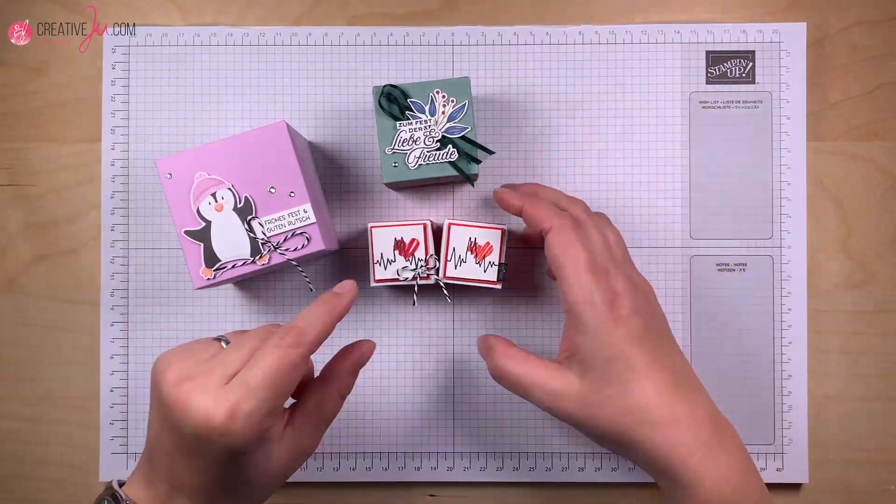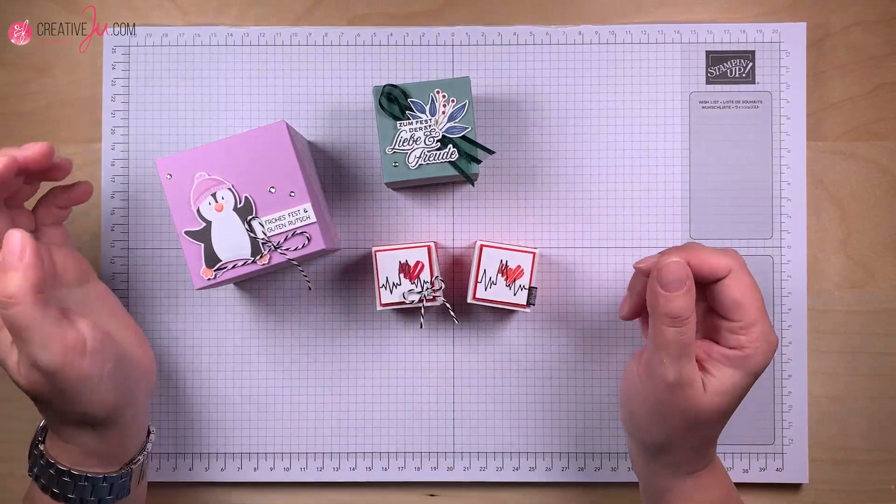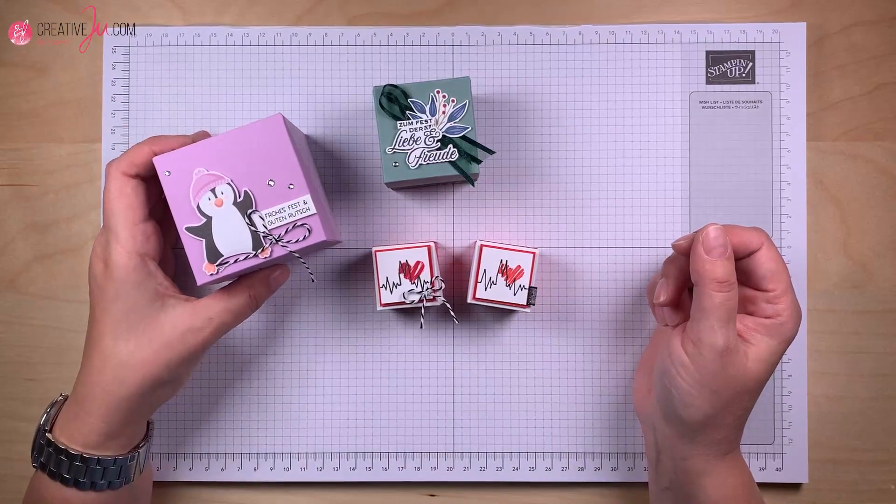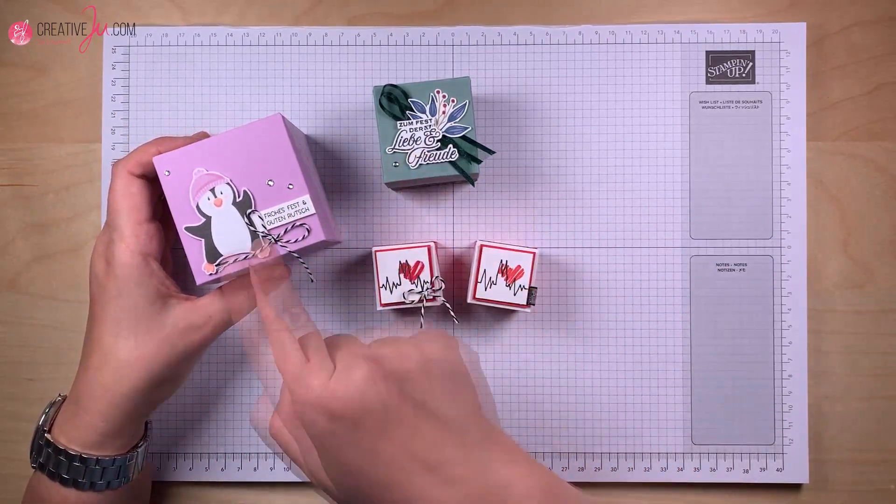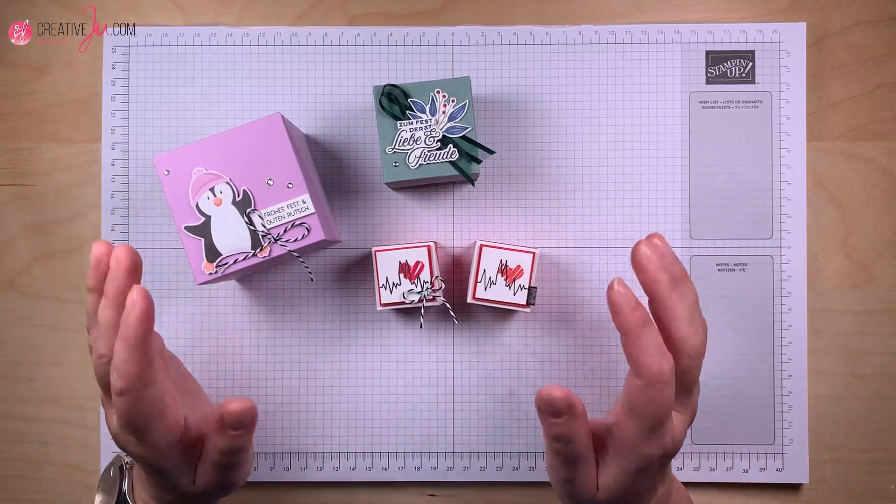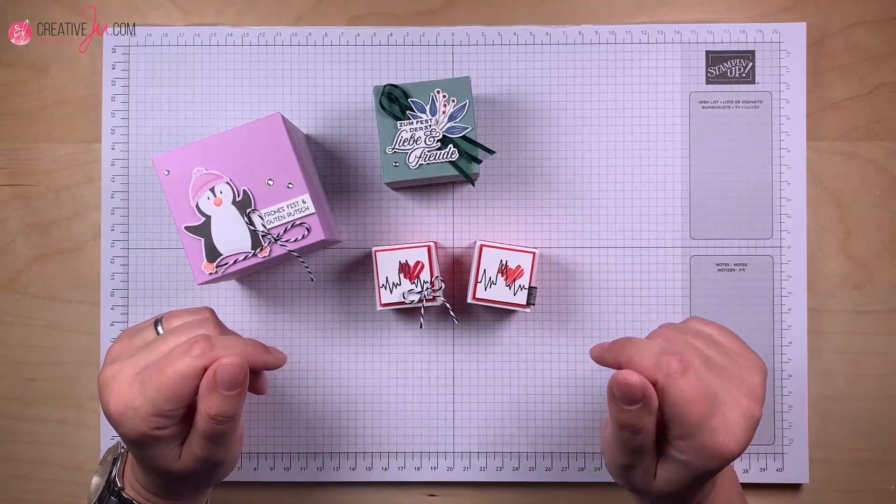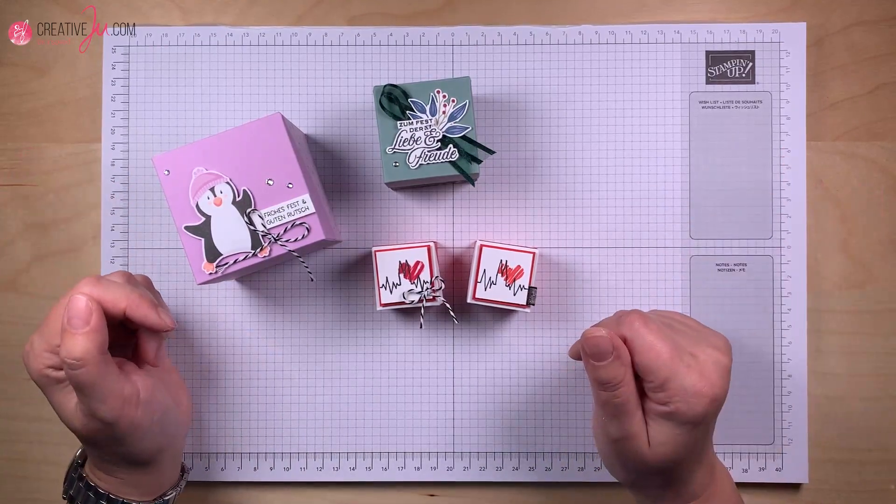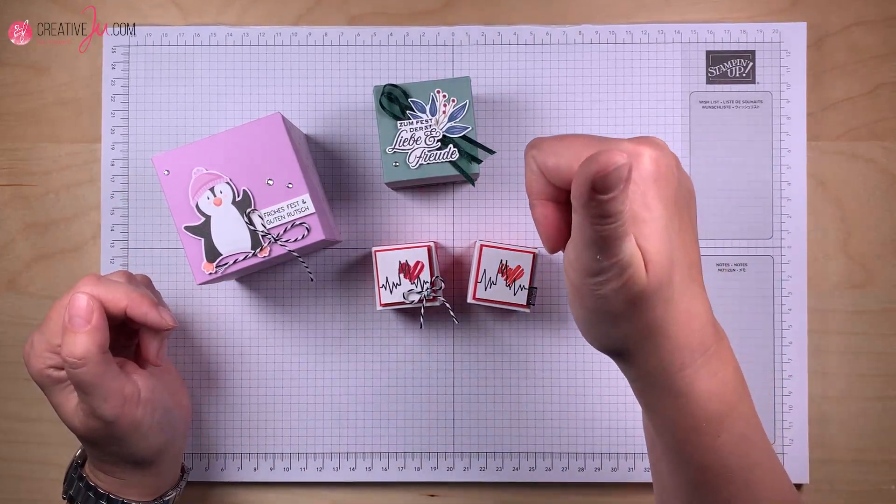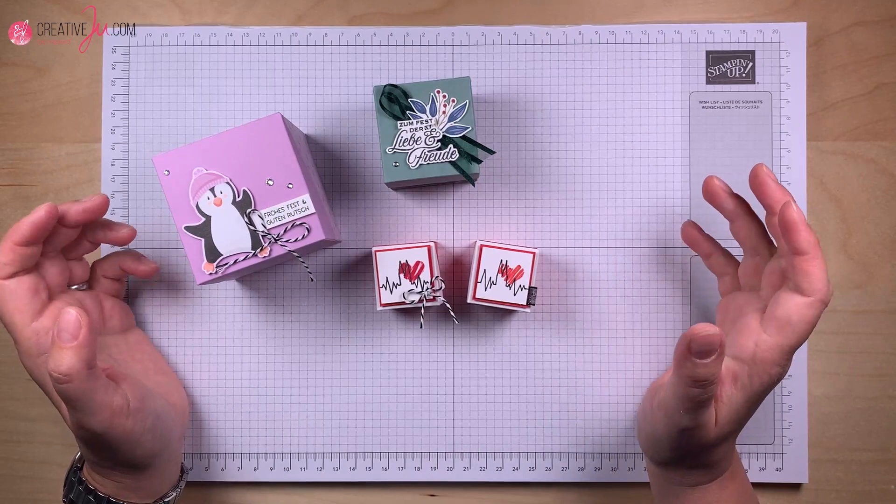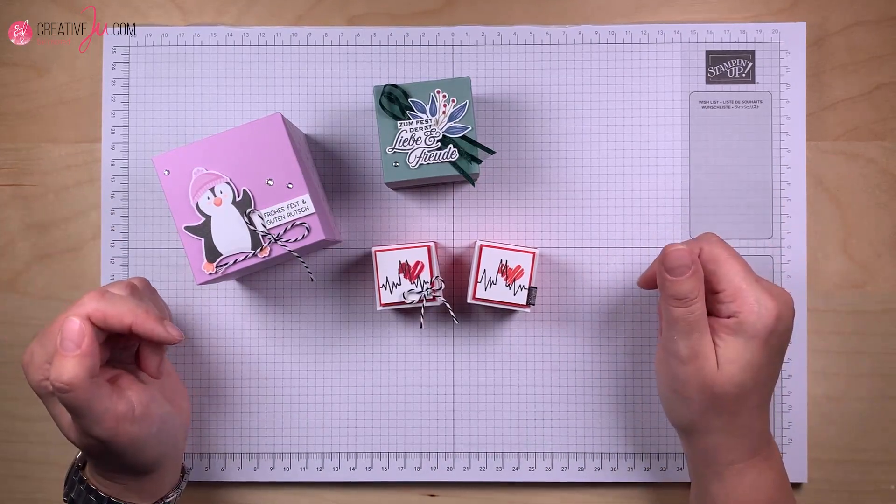Das war jetzt mein Projekt für euch heute. Eine Box mit einem schrägen Deckel in gleich drei Größen. Groß, Mittel, Mini. Alle diese Größen findet ihr auf einer Skizze auf meinem Blog. Der Link ist wie immer unten. Ich hoffe, euch gefällt heute mein Projekt. Wenn ja, freue ich mich natürlich wie immer über einen Daumen hoch. Ich freue mich natürlich auch über Kommentare, auch ohne Verlosung.